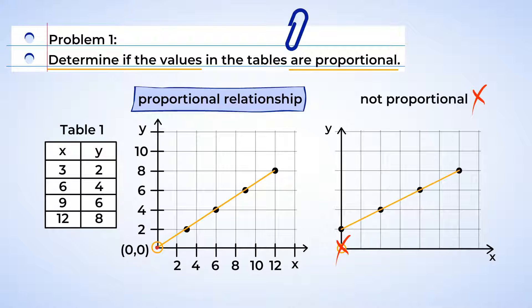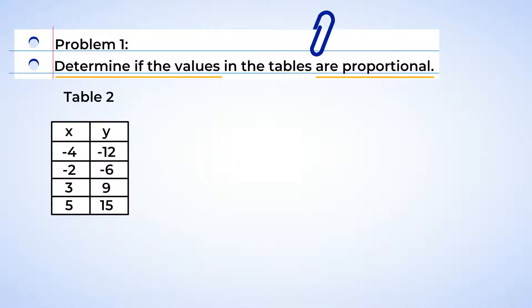Graphing values is a great way to visualize numbers, but it can take a lot of time. We can determine if the quantities are proportional without graphing. How, you might ask? Well, let me show you. When we look at the table, we want to see if there is an equivalent ratio for each pair of numbers. And equivalent ratios means that all of the ratios created by the x and y values create the same ratio.